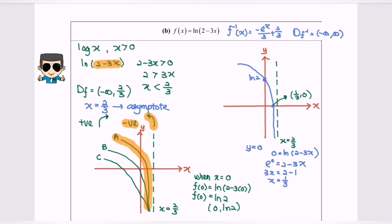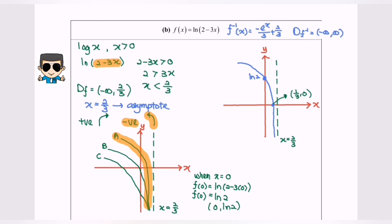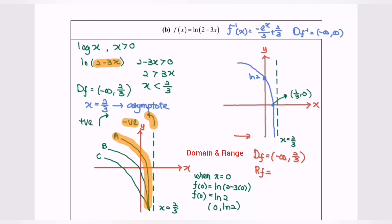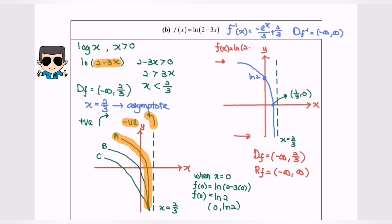Finally, we are going to determine the domain and the range. The domain for this graph would be negative infinity until 2 over 3, where 2 over 3 is not included. Regarding the range, it will be from negative infinity to positive infinity. Do remember to label the graph: f(x) equals ln(2 minus 3x). Thanks for watching.